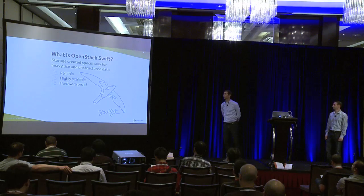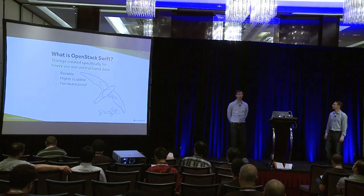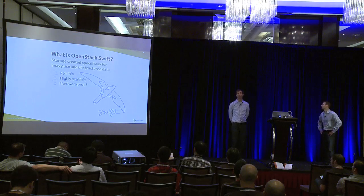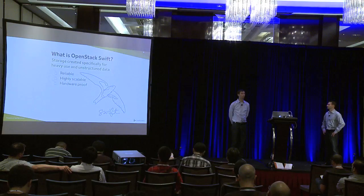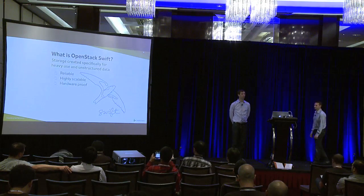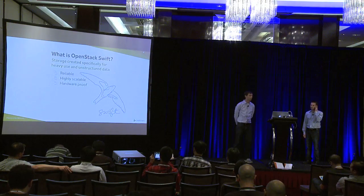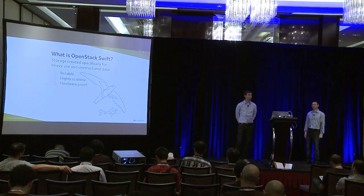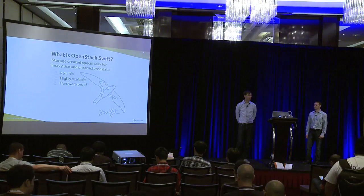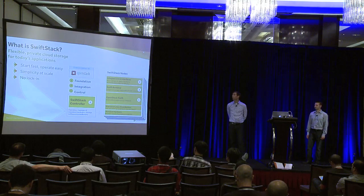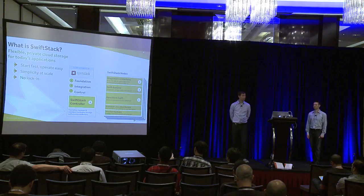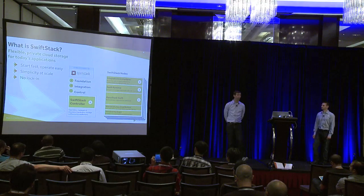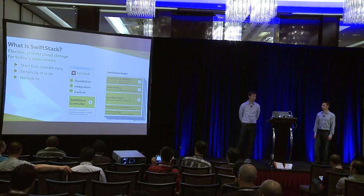Swift is an object storage system created specifically for unstructured data — not databases and running operating systems, but everything else: documents, images, videos, log files, snapshots. It's designed around principles of being highly reliable, scalable, and able to deploy on lots of different types of hardware, typically commodity-based hardware. SwiftStack provides a product around OpenStack Swift to make it easy to get started and scale — adding nodes quickly into an environment and deploying on lots of different hardware types.